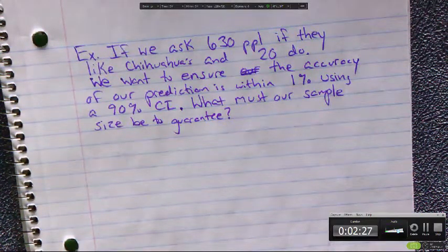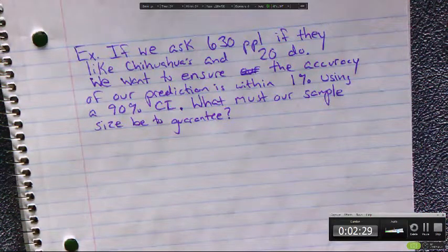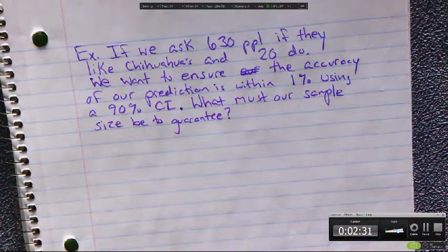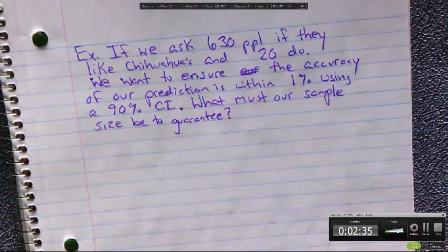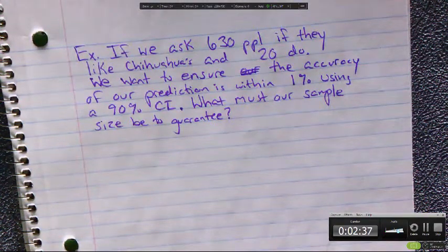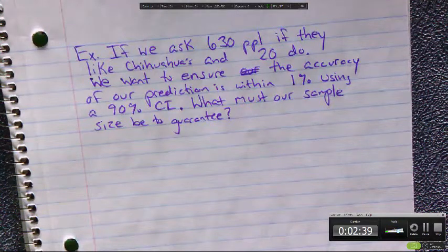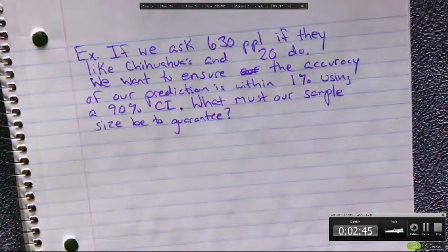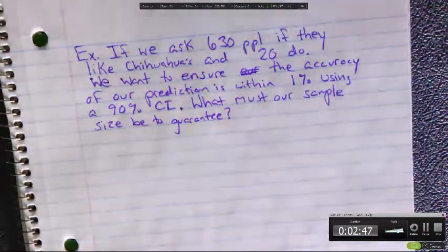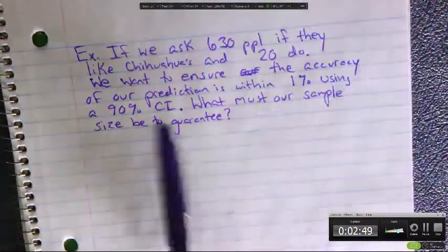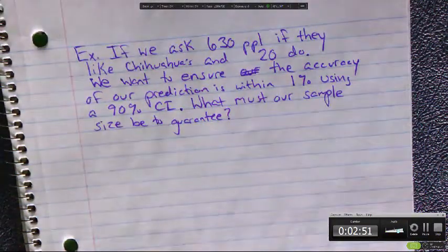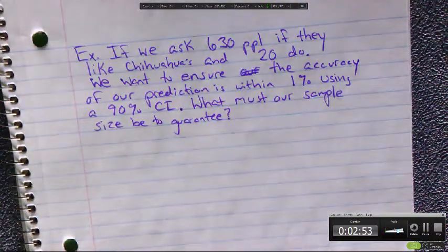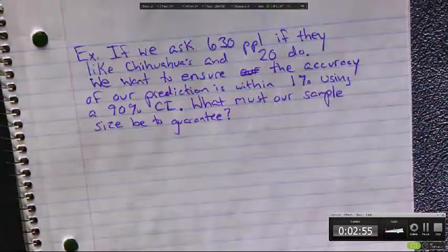If you ask 630 people and 20 of them like chihuahuas and you conducted an accurate study, then theoretically if you were to double that to 1260 people, 40 should like chihuahuas. If you increase your sample size, the proportion should not change. So if you want to ensure accuracy is within 1% using a 90% confidence interval, what must our sample size be to guarantee this?